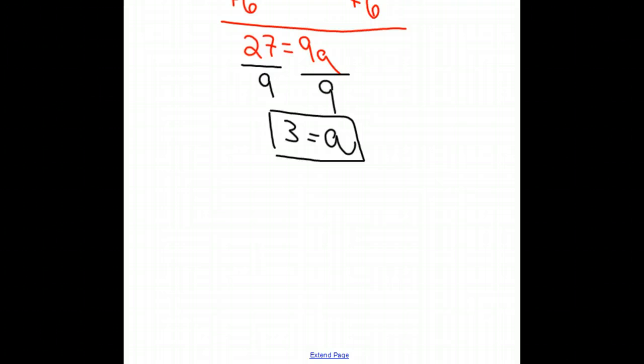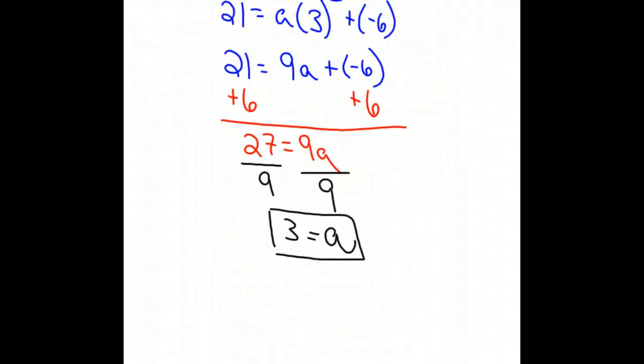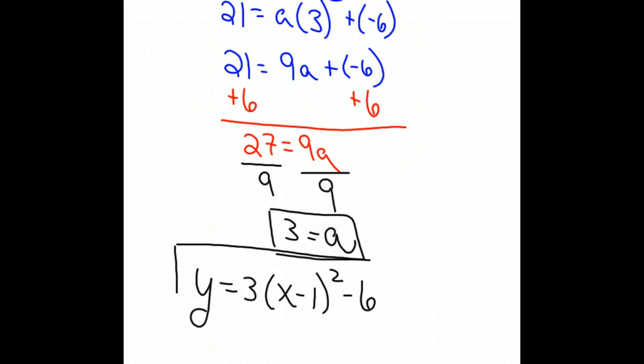our quadratic equation that has a vertex of 1, negative 6 passing through the point 4, 21 will be y equals 3 times x minus 1 squared minus 6. And that is our quadratic equation.